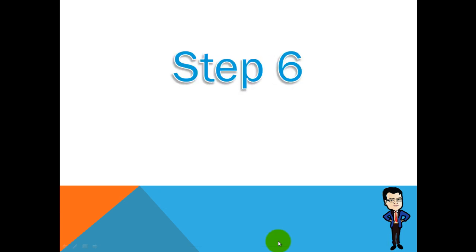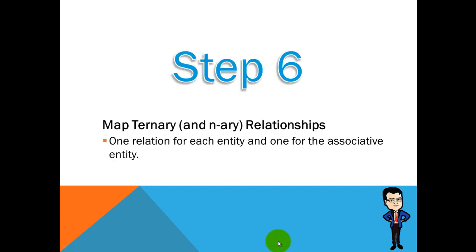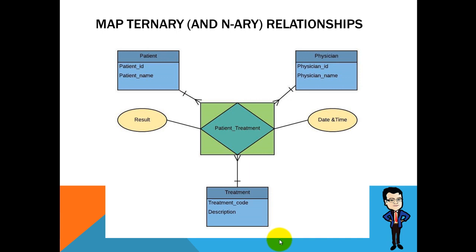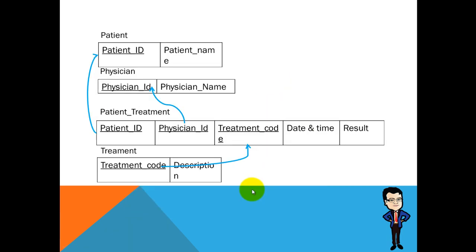Step six: map ternary relationships. Create one table for each entity and one link table for the associative entity. Here, patient-physician-treatment is a ternary relationship as three entities participate in it, creating an associative entity. We create separate tables for patient, physicians, and treatment, plus a separate table for the associative entity, with a composite key composed of the primary keys from the three entities.